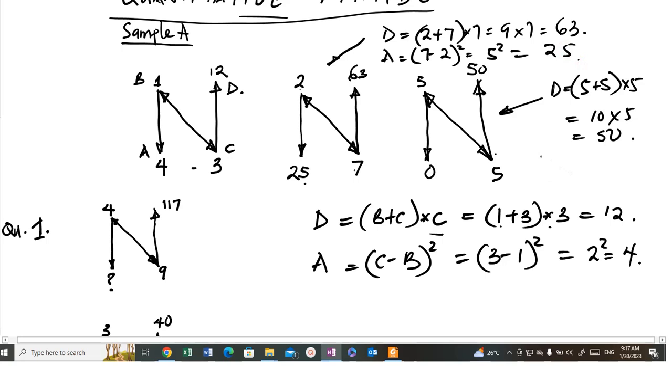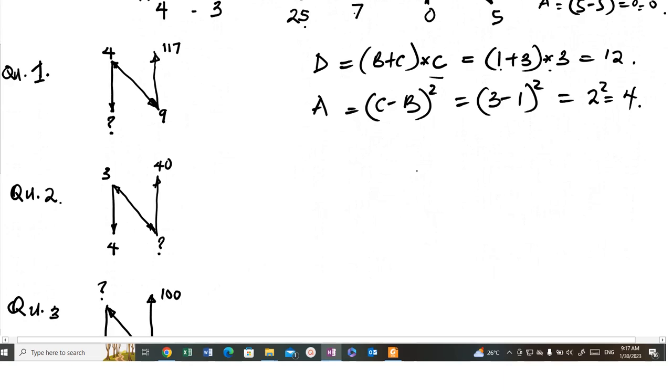Now, from this one is 5 minus 5 all squared, which is equal to 0. Now, from this one is equal to 5 minus 5 squared. Now, for this one is 0 squared. From these two formulas...